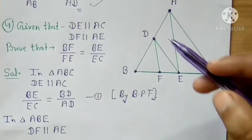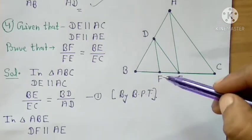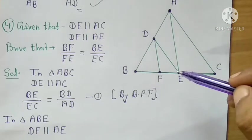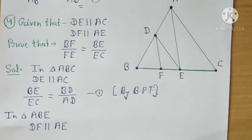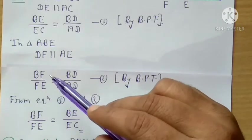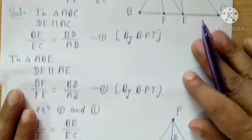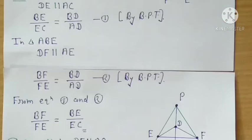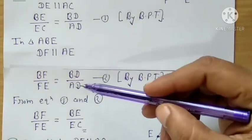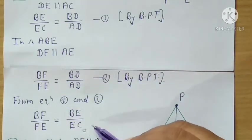Now there is another line which is also parallel. Take triangle ABE — here DF is parallel to AE. So the ratio becomes BF upon FE equals BD upon AD — equation 2, by BPT. Now comparing equation 1 and equation 2, both have BD upon AD on the right-hand side. Since the RHS is equal, the LHS must also be equal — and that is what we had to prove. Done.